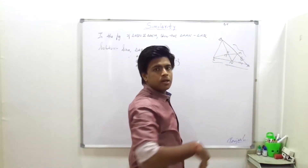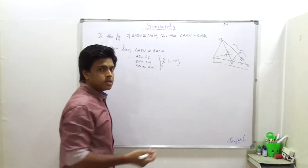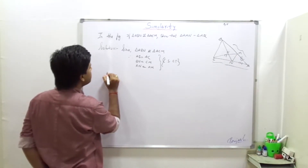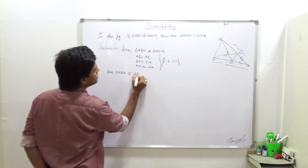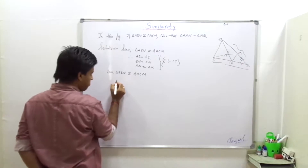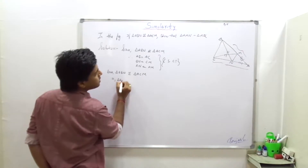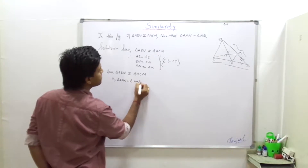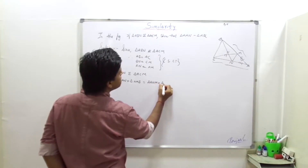Let me write the ratios — the values or the proportion. Since triangle ABN is here, that is triangle ABN equals triangle AMN plus triangle NMD. And triangle ACN equals triangle ANM plus triangle NCN.